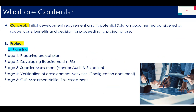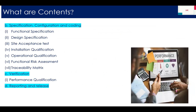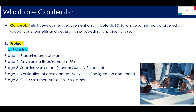Now the project phase. In the project phase, first is planning — preparing a project plan. Second, developing requirements: what is your URS specific for your software, modules, and add-on facilities. Stage three, supplier assessment — vendor audit or selection. Stage four, verification of development activities. Stage five, your GXP assessment or initialization when you are going to install your software.